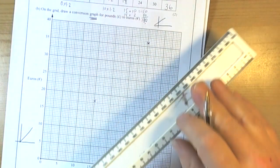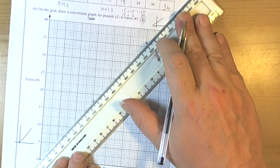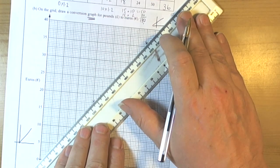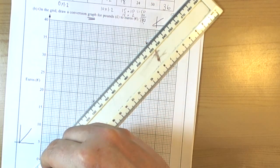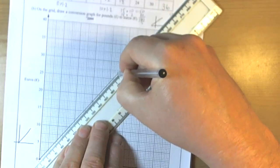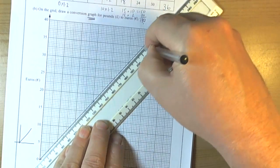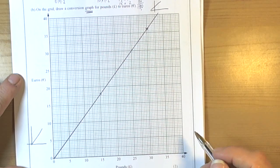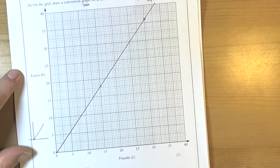So then we get our ruler. And with all graphs we make sure that we draw the line all the way across, being really careful that we get the accuracy mark. So we go all the way across the graph. So that's the conversion graph drawn, and then we look at the last part of the question.